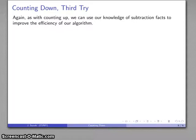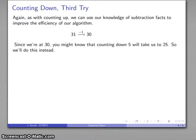As with counting up, we can use what we know about subtraction facts to improve the efficiency of our algorithm. So, if we do learn some subtractions, we can apply this method much more efficiently. From 31, I might go back 1 to 30. And if I'm at 30, maybe I know that 5 before 30 is going to be 25. So, instead of counting back down by 1s, I might count back by 5, down to 25.